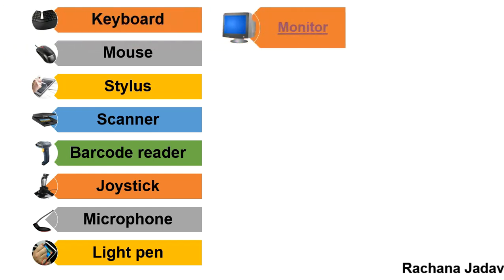Now the output device — output devices provide output in the form of soft copy and hard copy. The first one is the monitor. The monitor is also known as VDU, that is Visual Display Unit, and it looks like a television. Now we will see the different types of monitors.